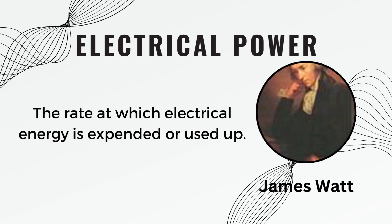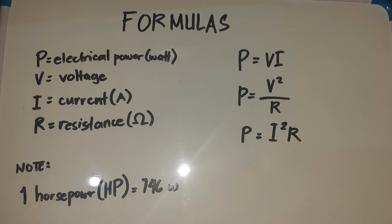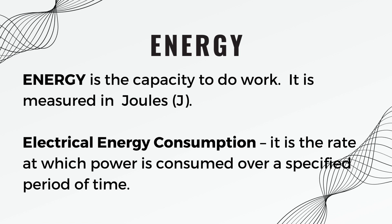Electric power is defined as the rate at which electrical energy is expended or used up — the rate at which electric energy is converted into another form such as light, heat, or mechanical energy, or converted from another form into electrical energy. Its unit is watts. The formulas for electrical power are: P = VI (voltage times current), P = V²/R (voltage squared over resistance), or P = I²R (current squared times resistance). Note that one horsepower equals 746 watts.